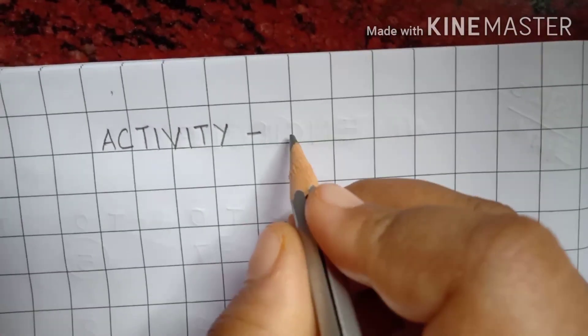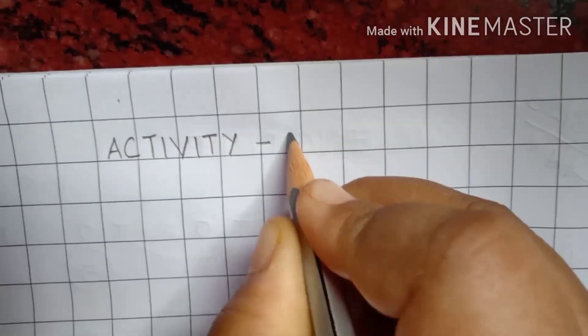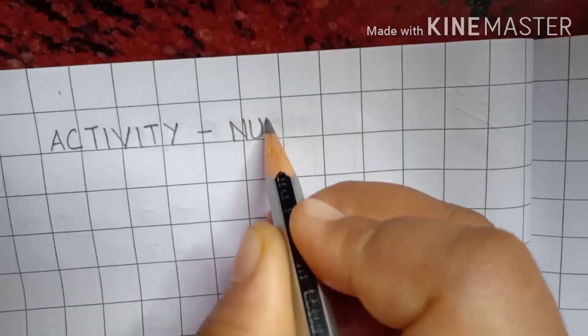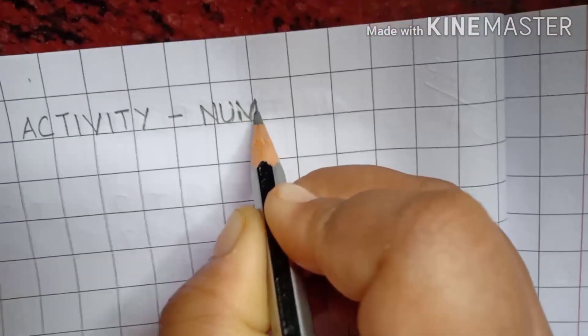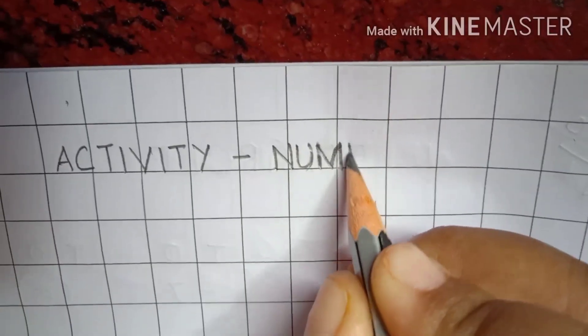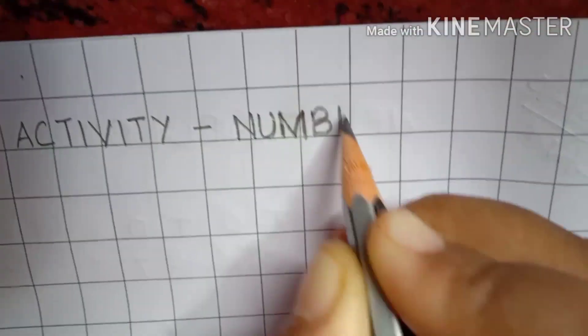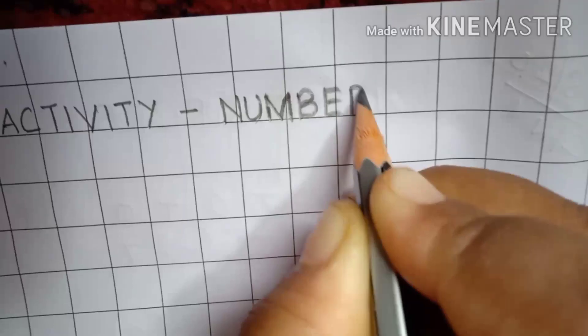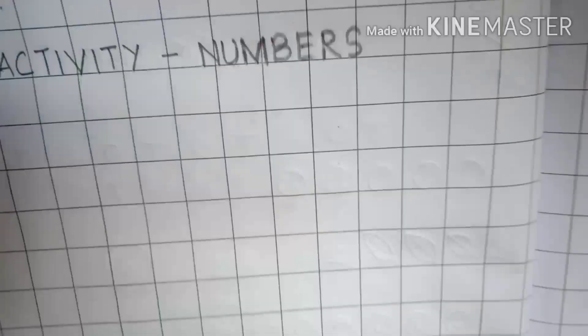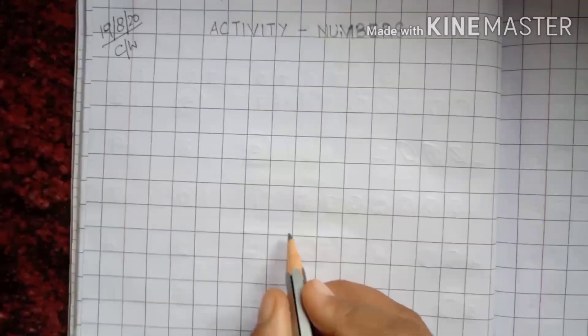Put a hyphen like this and then write here N, U, M, B, E, R, S. Activity, numbers.